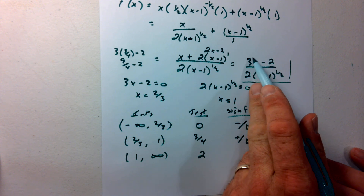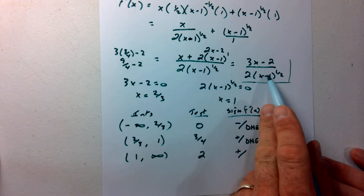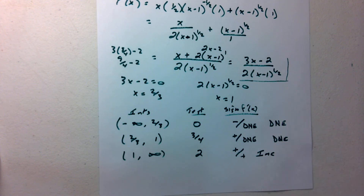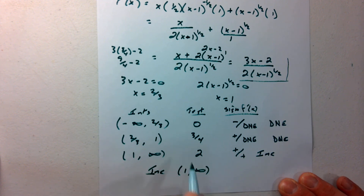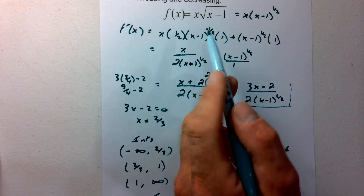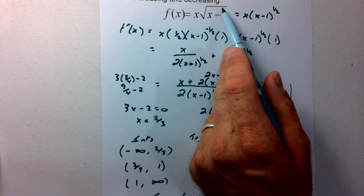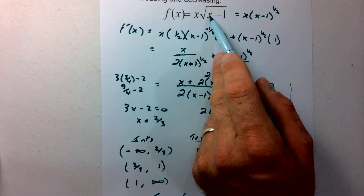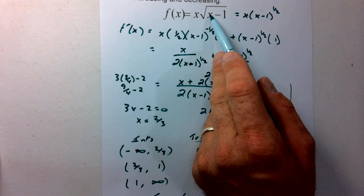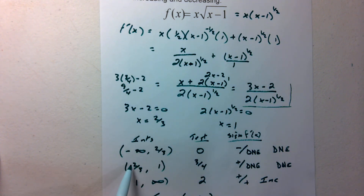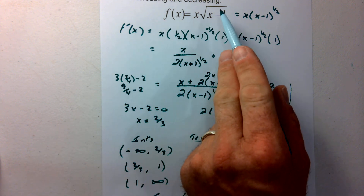Plugging in 2: the numerator gives a positive. For the denominator, 2 minus 1 is 1, and 1 to the one half is 1, so we get positive over positive — the function is increasing. So we only have one interval: increasing from 1 to infinity. That makes sense, since for the original function x times √(x minus 1), we can't take the square root of a negative number in the real number system, so x cannot be less than 1 — meaning the first two intervals don't exist.